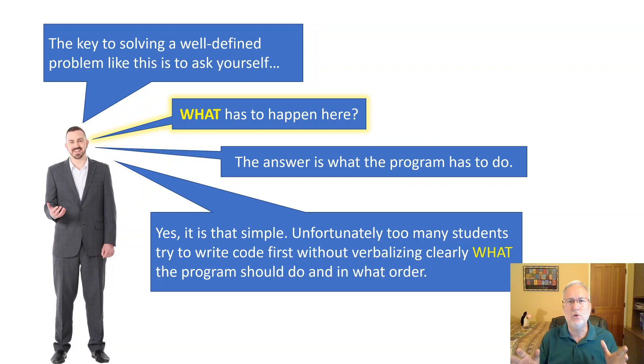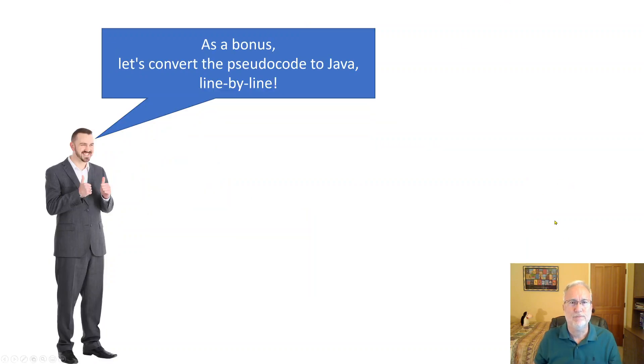And so the A students who understand this say the class is easy because it is. But if you don't do this, the class is really hard because you don't know what you're doing. You haven't answered the question: what has to happen?